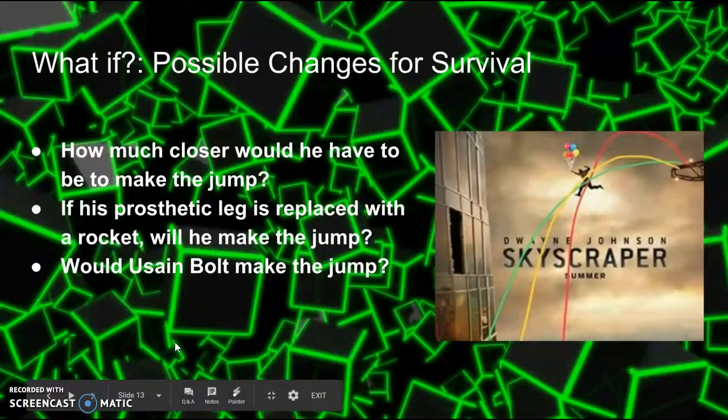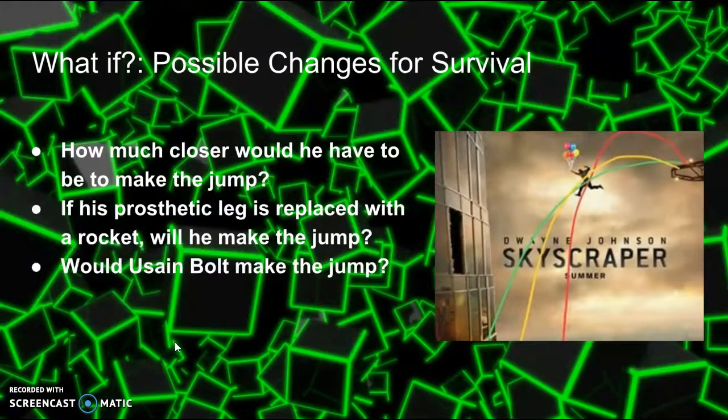So, we now know that The Rock will not, in fact, make this jump. What could be done to change this situation and possibly save the life of our favorite wrestler? We asked ourselves the following questions. How much closer would he have to be in order to make the jump? Our hero also has a prosthetic leg in this film. If his leg is replaced with a rocket, will he make the jump? Would Usain Bolt make the jump? In the following slides, we explore these alternative possibilities.